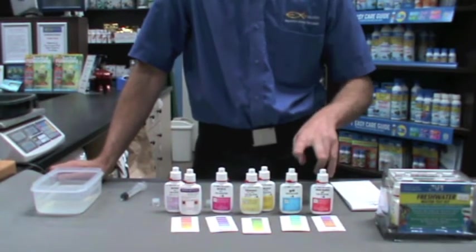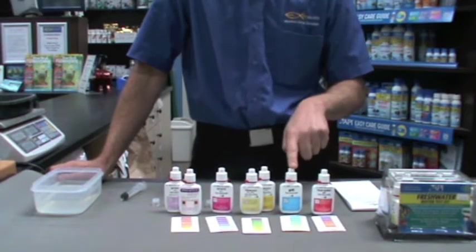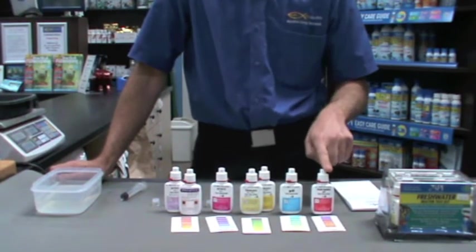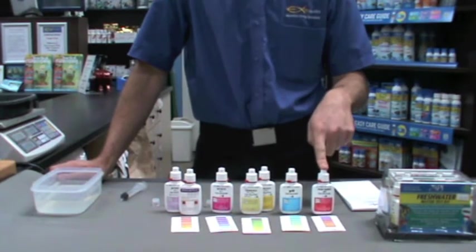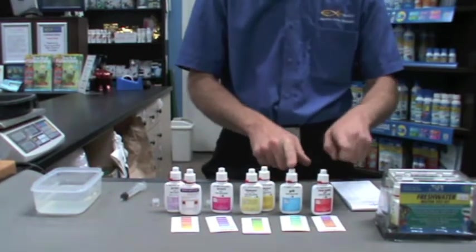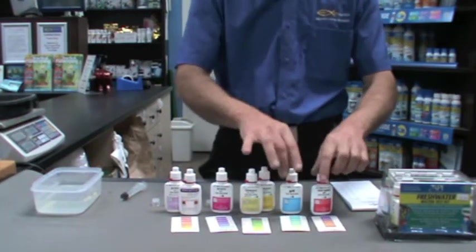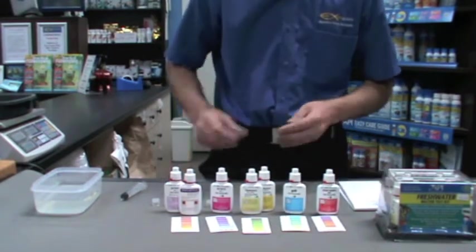The pH comes in two different bottles: one for low range pH which is 6 to 7.8, and one for high range pH which is 7.4 to 8.8. Once you've done this once you'll know which range your tank lies in and be able to decide which test to use. Let's start with the pH.